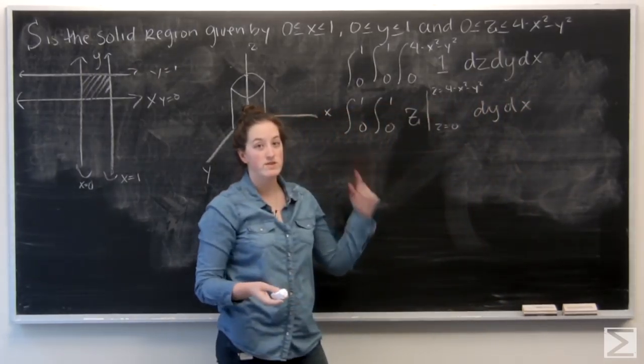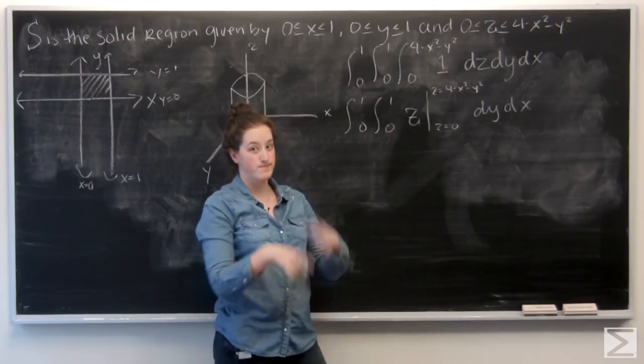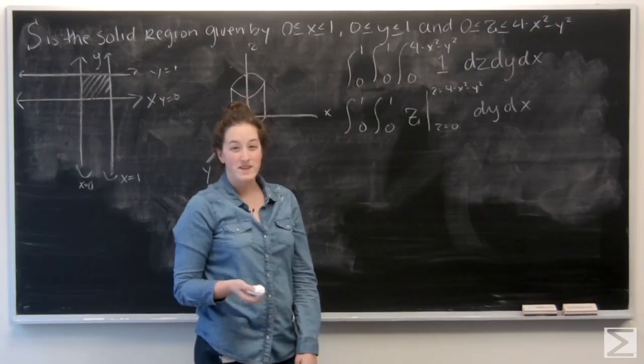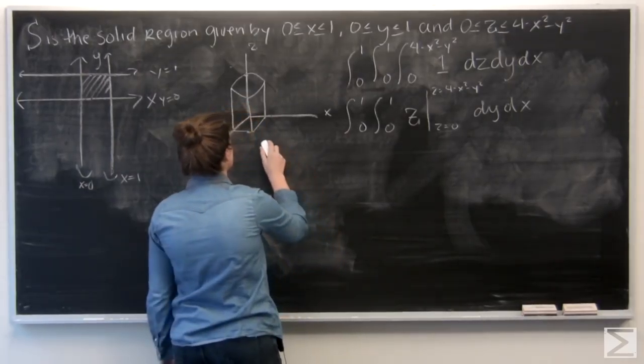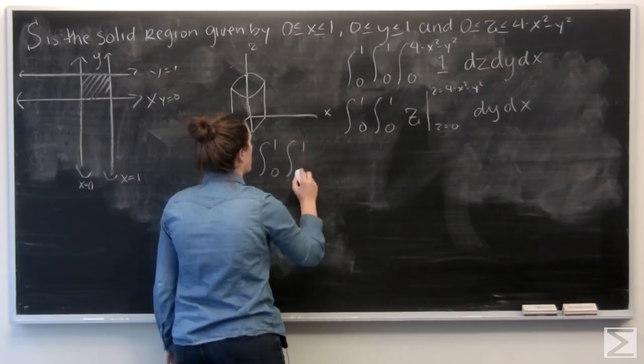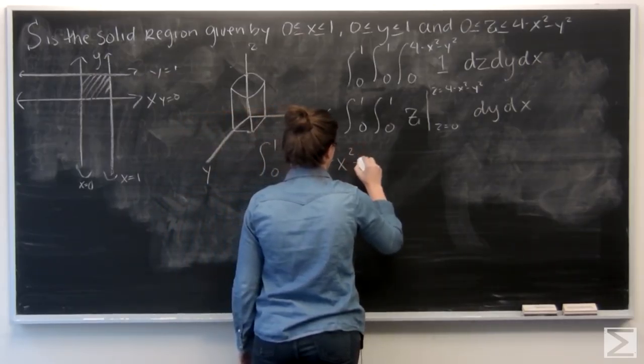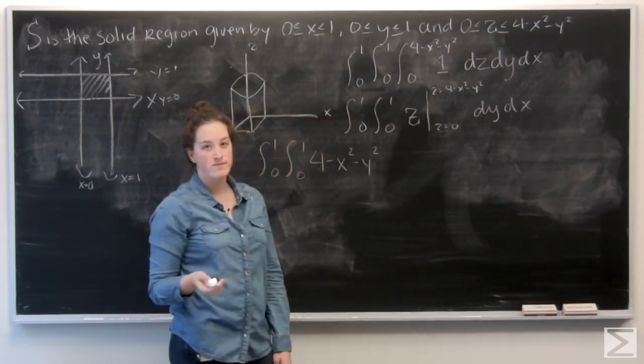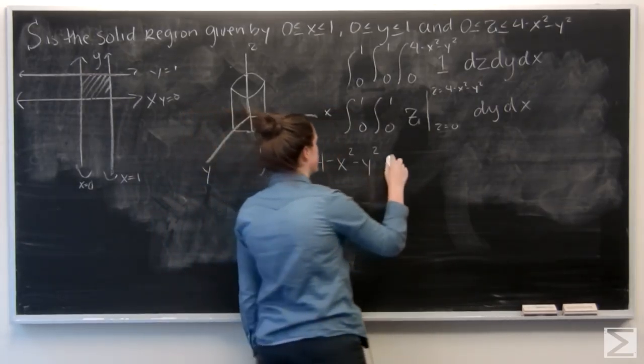From z equals 0 to z equals 4 minus x squared minus y squared, that paraboloid. So I'm going to plug in 4 minus x squared minus y squared first. So now I want to plug in 0, which is just going to be 0.